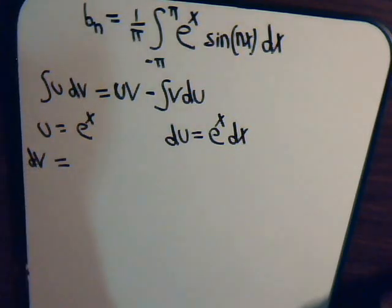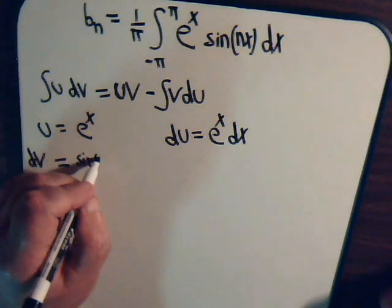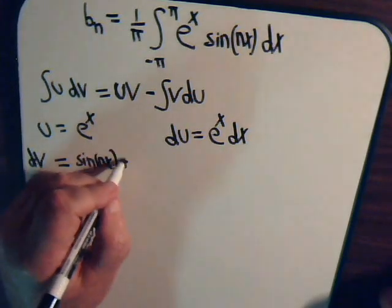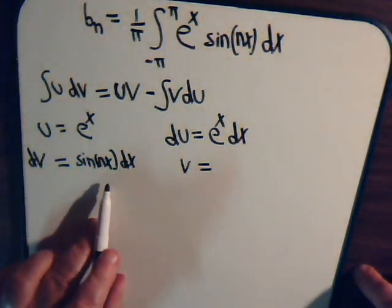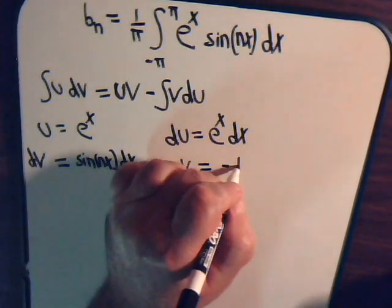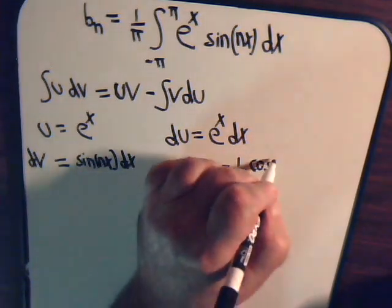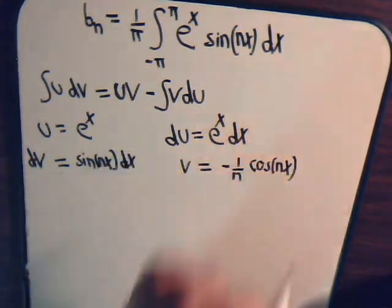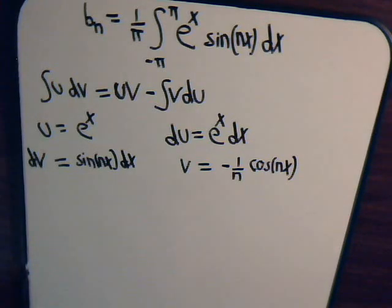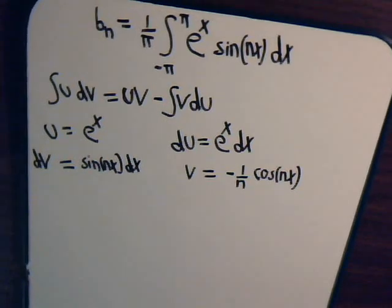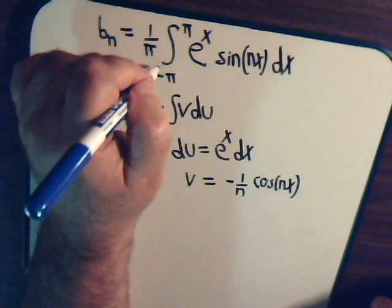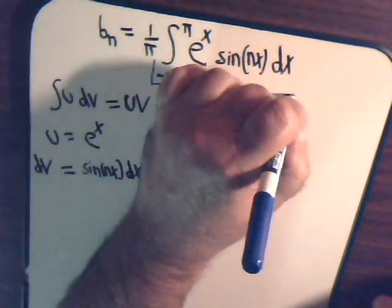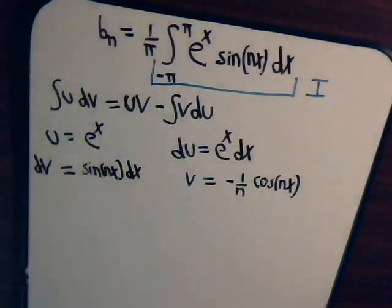dv equals sine of nx dx. For v, the integral of sine is minus cosine, so v equals minus one over n times the cosine of nx. Now, to save some writing, let's call this integral I, just as we did before.